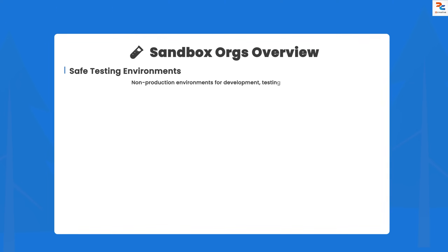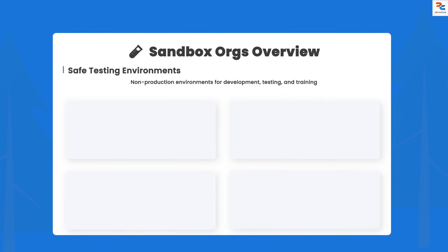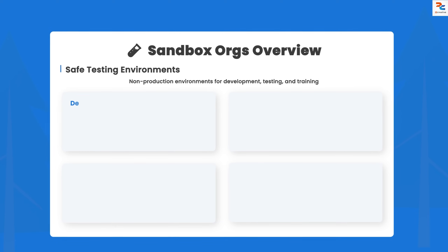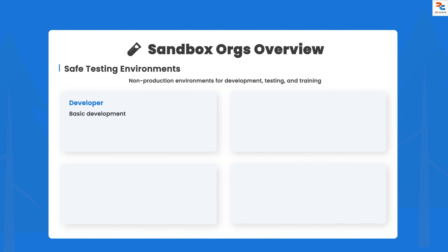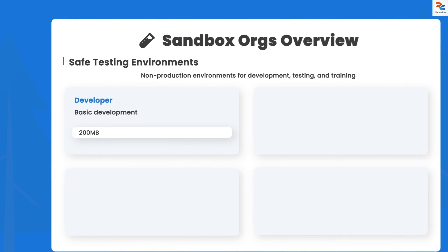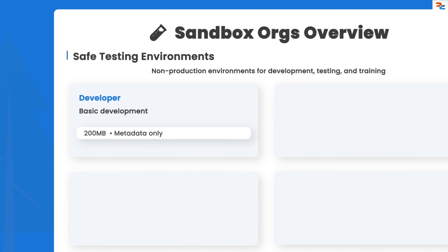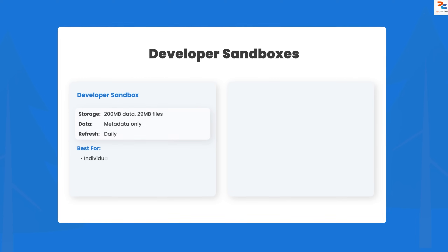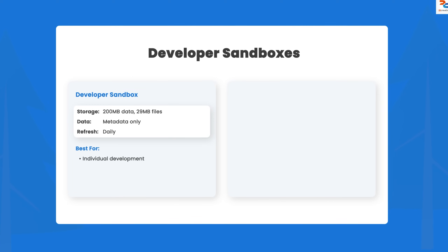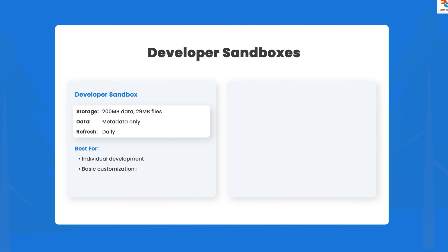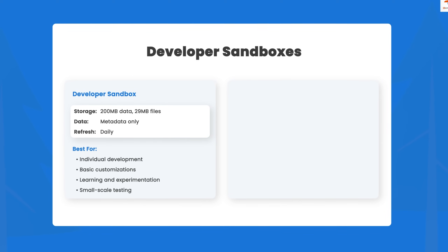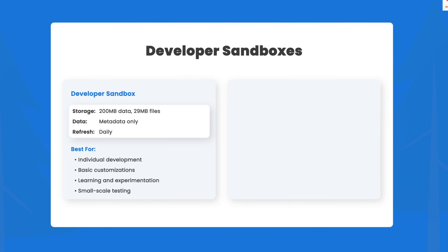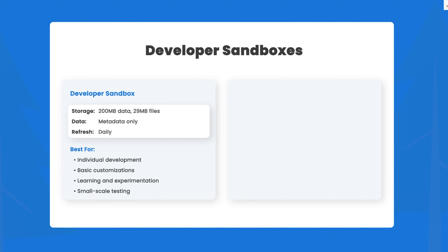Next up: sandbox orgs — your safe testing environments. There are four types. First, the developer sandbox: the basic development environment with 200 MB storage, metadata only, and it refreshes daily. Perfect for individual development work. Since there is no production data, it's ideal for testing workflows, validation rules, and custom code without any risk to real information.